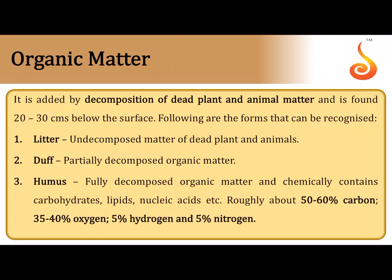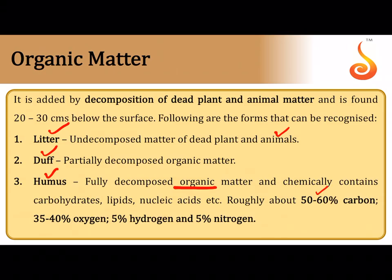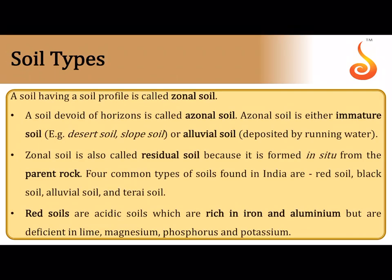Different types of organic matter found in soil: undecomposed material like a fallen leaf or dead body is referred to as litter; partially decomposed material is called duff; and completely decomposed material is referred to as humus. Humus contains a lot of organic matter — roughly 50–60% carbon, 35–40% oxygen, 5% hydrogen, and 5% nitrogen.